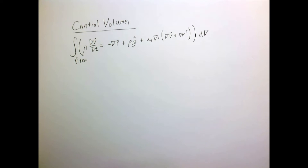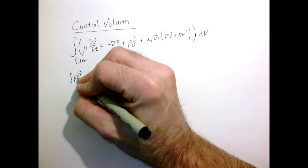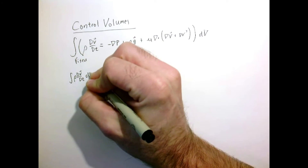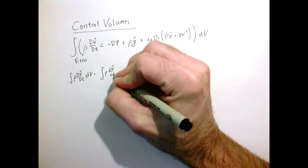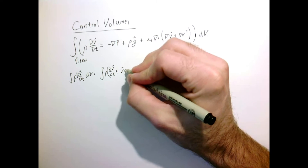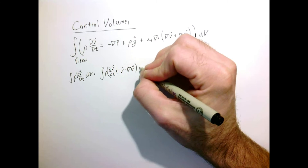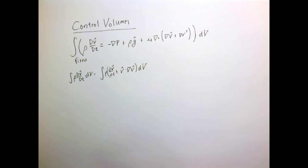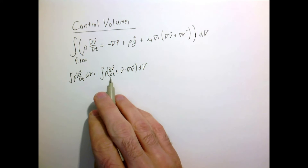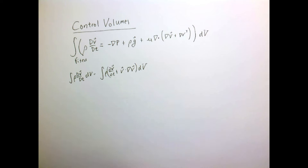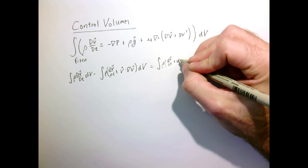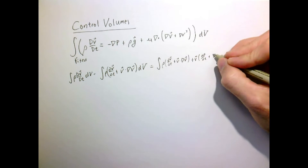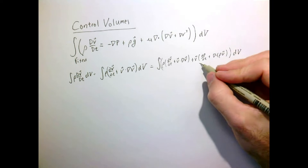We're simply going to take the integral of our differential equation and integrate over a region which is fixed in space. Let's start by casting our left-hand side, which is mass times acceleration, into this integral form. We can use a lot of the same rules we used in deriving the Navier-Stokes equations to simplify or change the form of this term, making manipulations which are essentially working in the opposite direction than we did before.